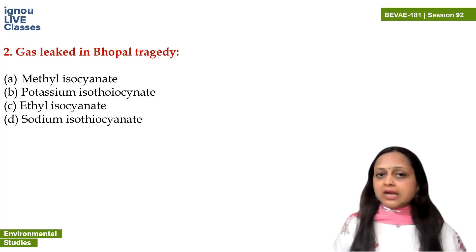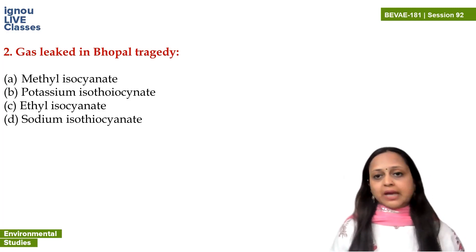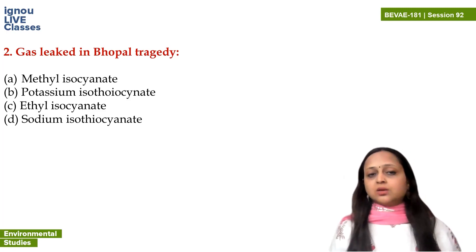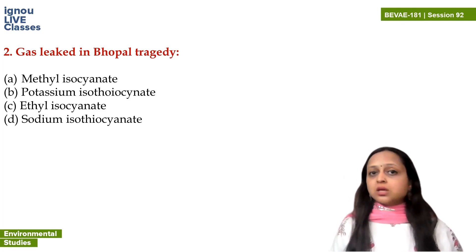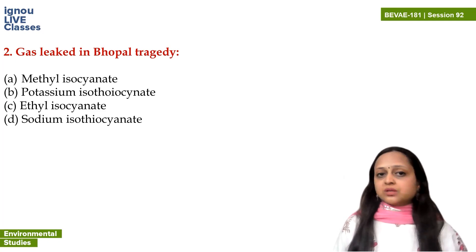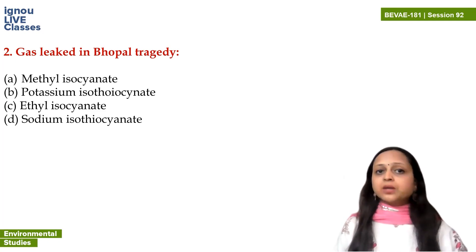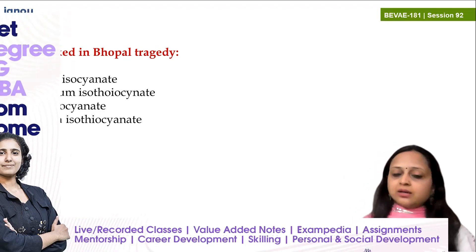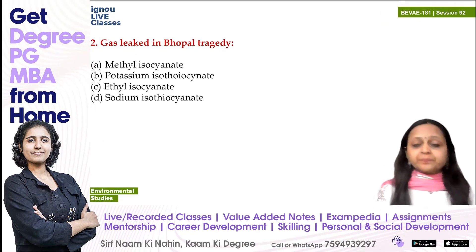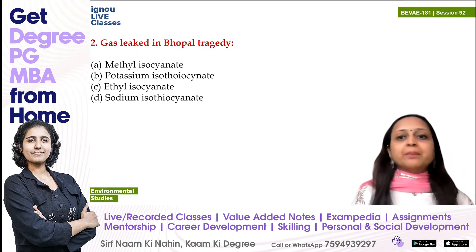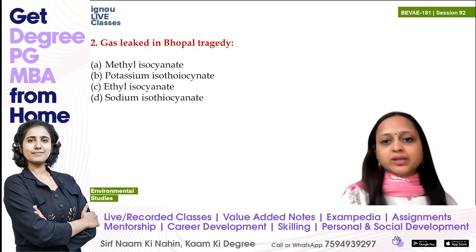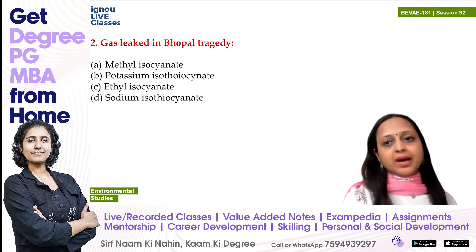So the gas which leaked in the Bhopal gas tragedy was methyl isocyanate. Don't confuse it with other options like potassium isothiocyanate, ethyl isocyanide, or sodium isothiocyanate — it is isocyanate, not thiocyanate. The short form is MIC.